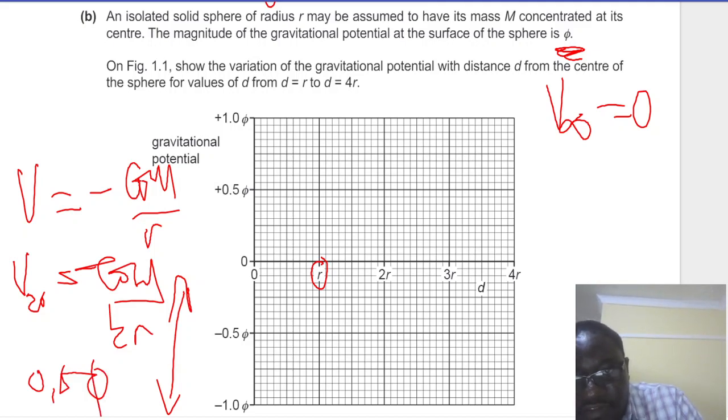Similarly, when the distance is 4r, you find that it's going to be minus G M over 4r, so it's just going to be a quarter of that. So we're going to start our graph from that position when phi is equal to minus 1, thereabout. Because remember I said we are occupying the negative quadrant. So our graph is to pass through this point when that is equal to that. And then when d is equal to 4r, we expect our graph to pass through 0.25 right there.